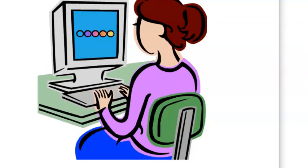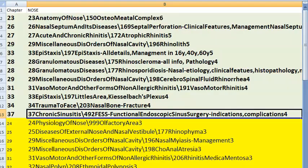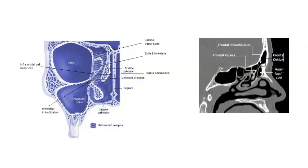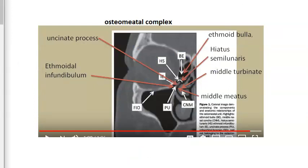Moving on to nose. Priority questions in nose: osteomeatal complex — where all the sinuses come together and drain into the middle meatus. Structures visible here include maxillary sinus, ethmoidal infundibulum, inferior turbinate, uncinate process, middle turbinate, and bulla ethmoidalis. The three sinuses draining here are the maxillary sinus, anterior ethmoidal air cells, and frontal sinus.